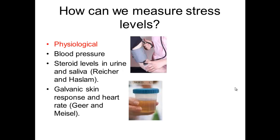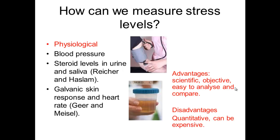Within each of those different measures, not only do you need to be able to give an example of a study, but you also need to talk about the advantages and disadvantages of each. With the physiological measure, it's obviously got the advantage that it's scientific and objective. It's relatively easy to analyse the results, and you get nice quantitative data, which means it's easy to make comparisons between different participants.